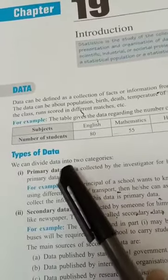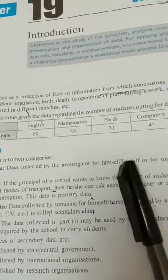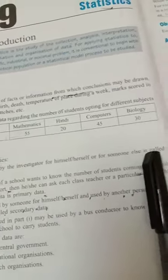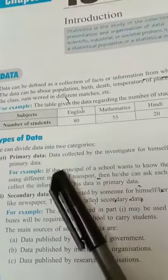Data has two types: Primary data and secondary data. What is primary data? Primary data means data collected by the investigator for himself or for someone else. So, one example.